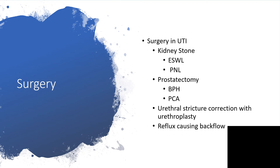We can have surgery in UTI. If UTI is complicated or caused by a kidney stone, we can have extracorporeal shock wave lithotripsy or percutaneous nephrolithotomy depending on the size. If there is benign prostatic hypertrophy or prostatic carcinoma that has not metastasized, we can have prostatectomy. If there is a stricture, that could be surgically corrected with urethroplasty. Reflux causing backflow could be surgically corrected as well.